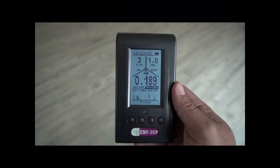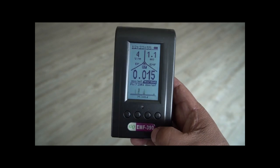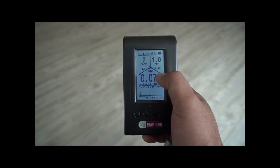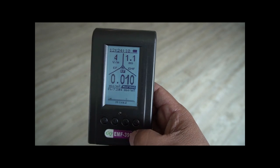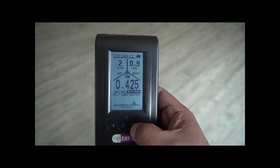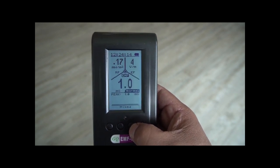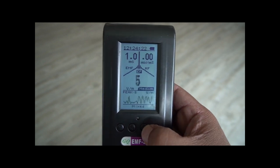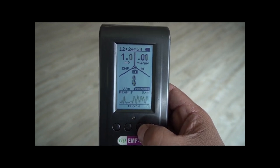So this is a meter that I use and this one is called a GQ EMF 390. What I like about it, it has three different measurements. It has radio frequency, which is what I'm on right now. I can rotate it. It has EMF in milligauss, that's magnetic field, and then it has electric field in volts per meter.